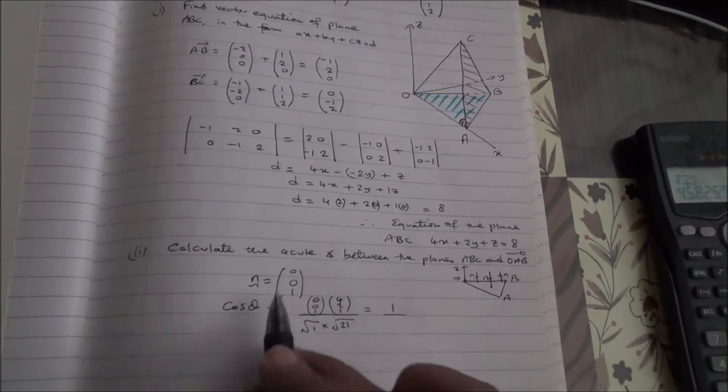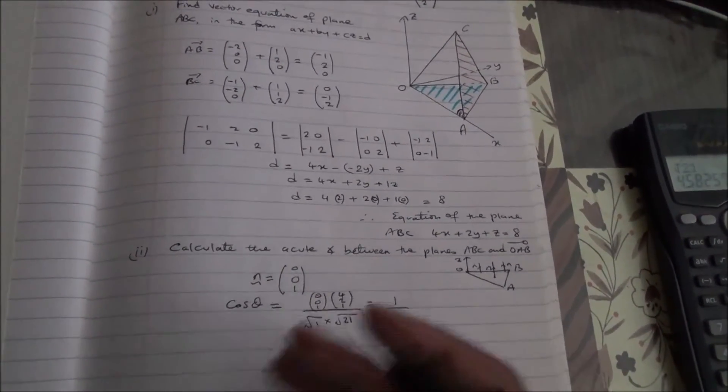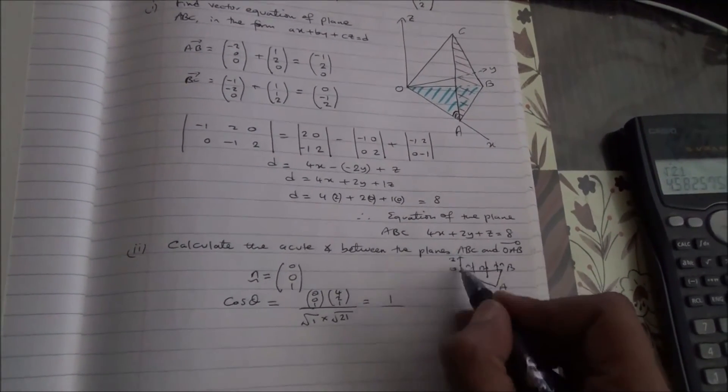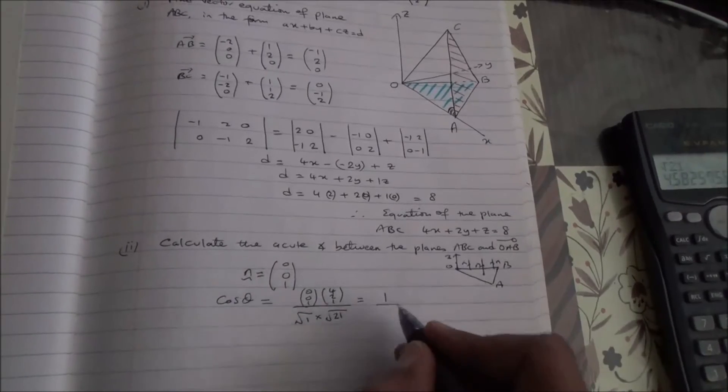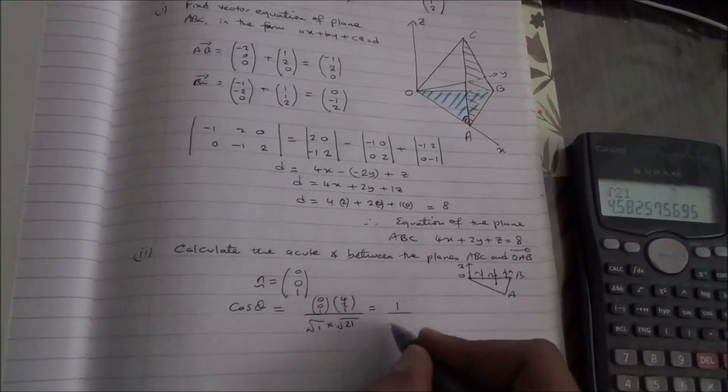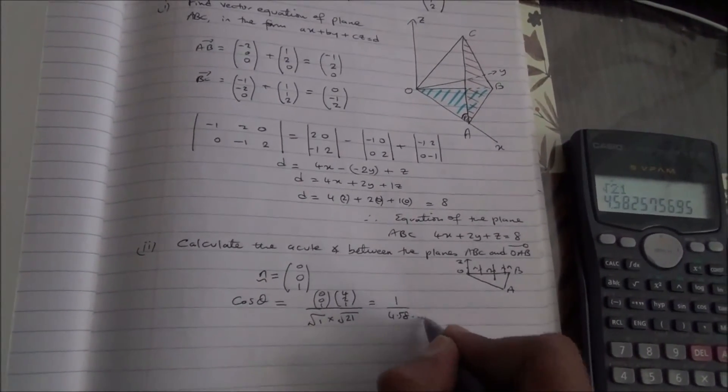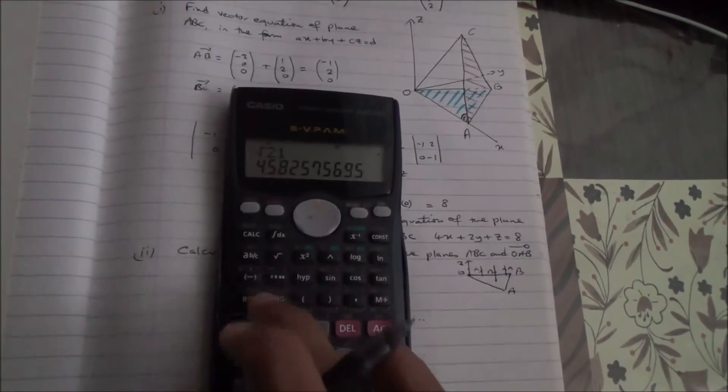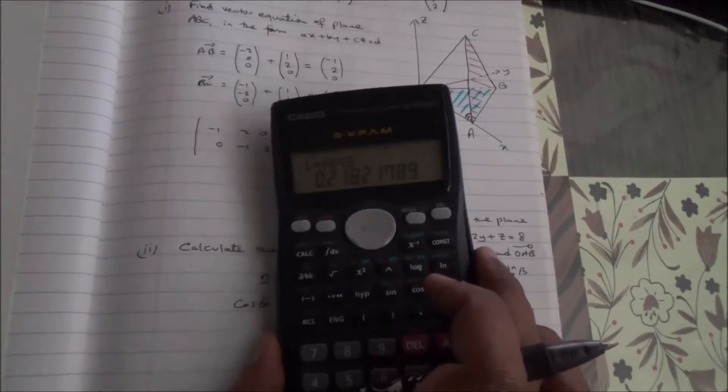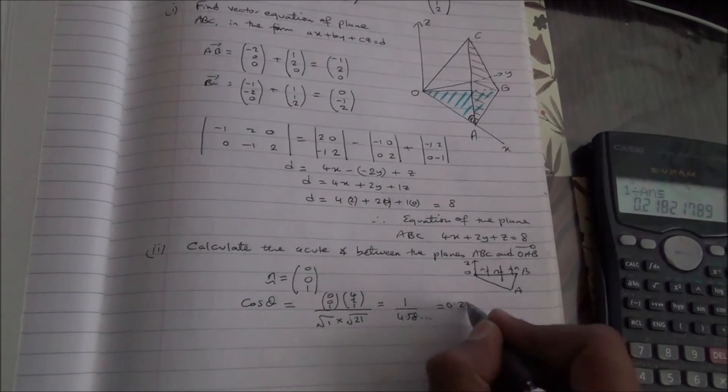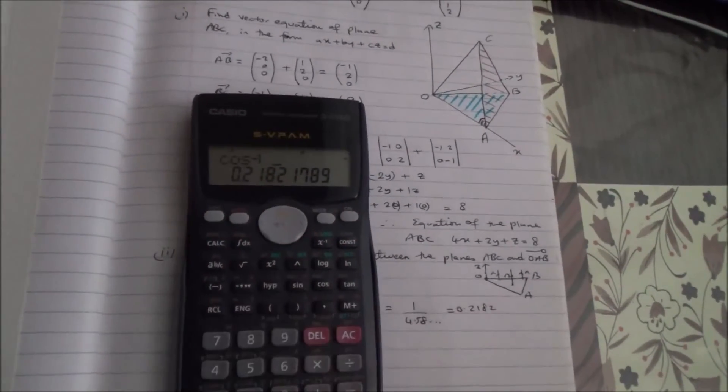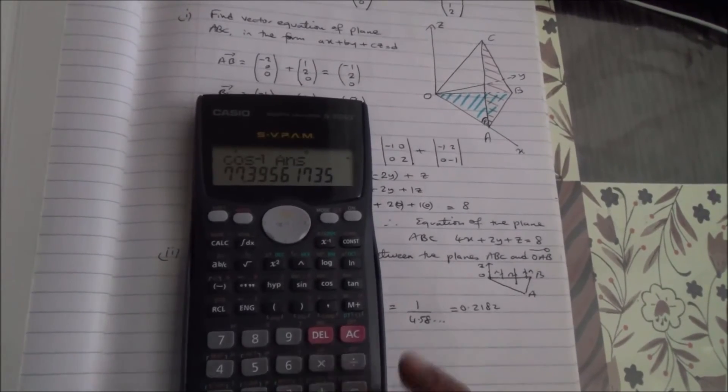Here, the simplest one for OAB is going to be 0, 0, 1. Okay, the starting point, the normal vector here would be 0, 0, 1 from the Z-axis. So, then, we have all of that divided by 4.58 something, and so on. So, let's do it on our calculator. So, 1 divided by the result, we get this. So, 0.2182, and if we do the inverse cos of the answer, we're going to get 73.32.